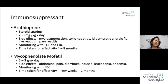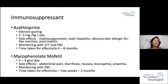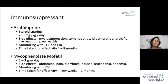Azathioprine is the other immunosuppressive agent — used as a steroid-sparing agent at 2 to 3 mg/kg/day. Side effects include altered liver function and myelosuppression, for which patients need monitoring. It is important to train junior doctors when using these drugs, as serious side effects may cause more harm to patients if not properly managed.